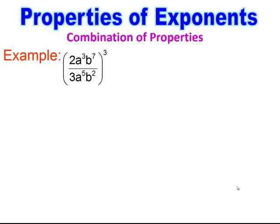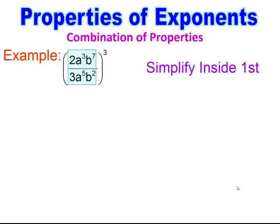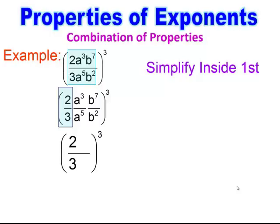When you have a combination of properties going on inside and it's raised to a power, the easiest way is to simplify inside first. Simplify all that stuff that's inside and then take the power on the outside. I like to break something like this into 3 separate problems by drawing a line. I simplify the first piece — 2 over 3 will not reduce any further, so I write it in my solution area.